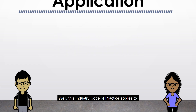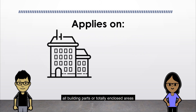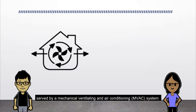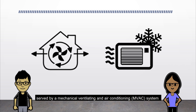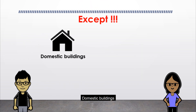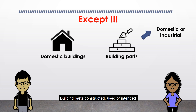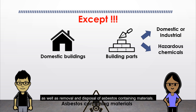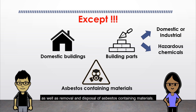Sure, Roshni. This industry code of practice applies to all within parts or totally enclosed areas served by a mechanical ventilating and air conditioning (MVAC) system, including air-cooled split units where there are persons at work, except domestic buildings, buildings constructed, used or intended for domestic or industrial purpose, building parts containing hazardous chemicals for analytical, research or preservation purposes, as well as removal and disposal of asbestos-containing materials.